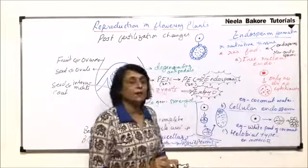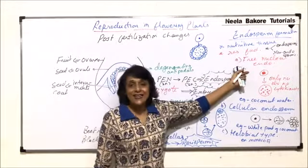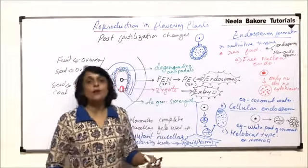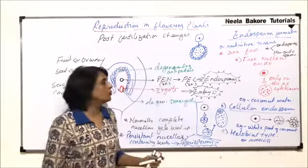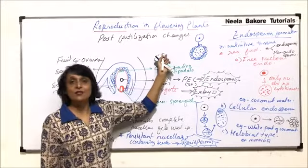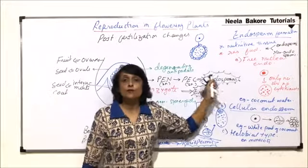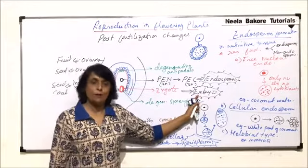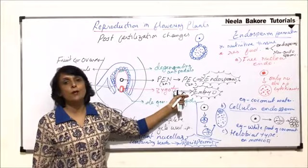Once we complete the process of embryo development, we will also talk about these types of seeds — endospermic and non-endospermic — and further classify them into dicot endospermic, monocot endospermic, dicot non-endospermic, and monocot non-endospermic. We have understood one process under post-fertilization changes — that is endosperm formation, the nutritive tissue supplying nourishment for embryo development. In the next part we will take up embryo formation and development.